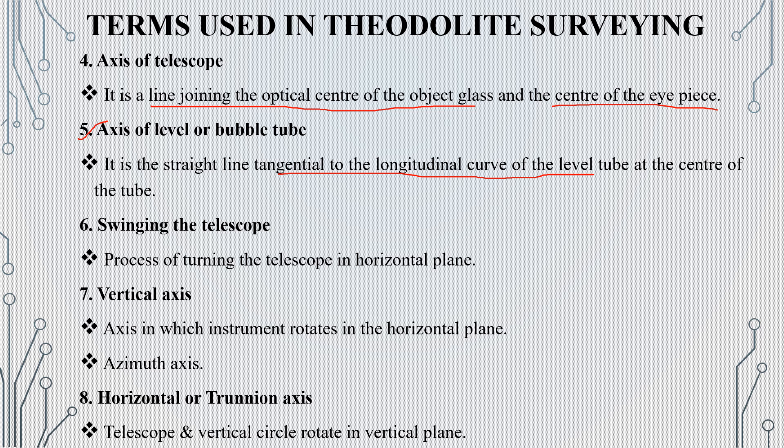The next term is swinging the telescope. Swinging the telescope is important. Transiting is rotation in the vertical plane, while swinging is rotation about the vertical axis in the horizontal plane.